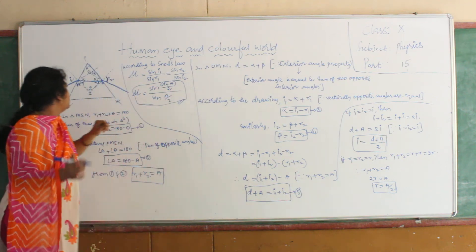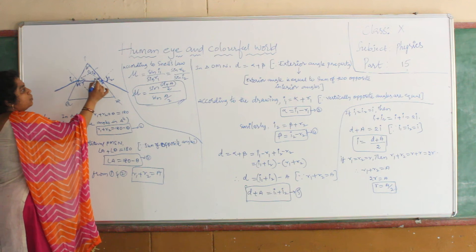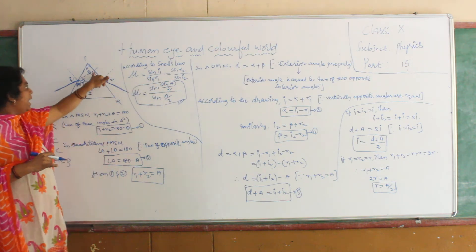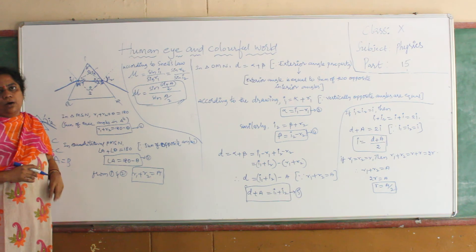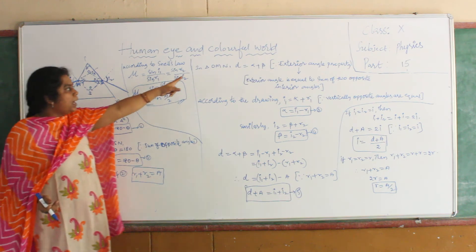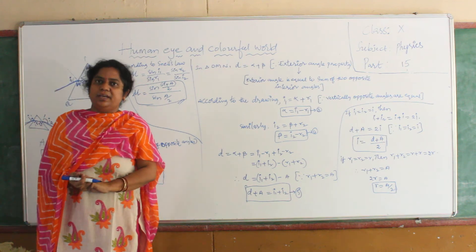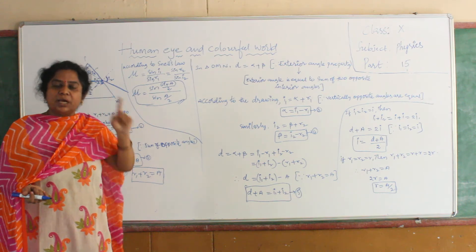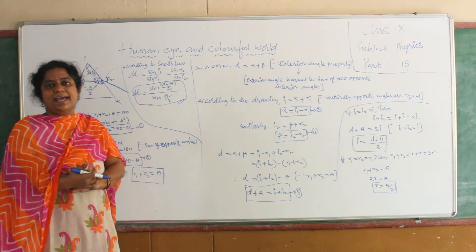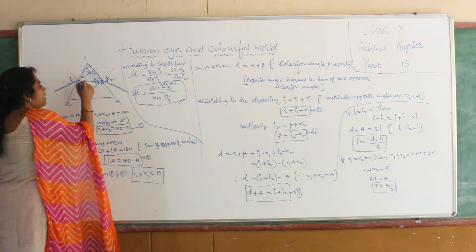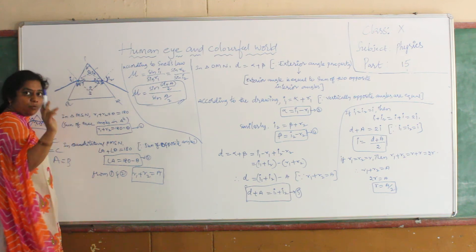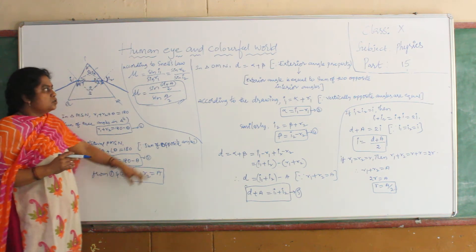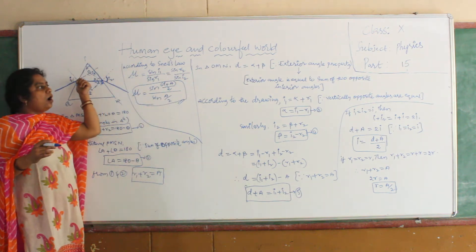Now consider triangle O, M, N. Using the exterior angle property — the exterior angle is equal to the sum of the opposite interior angles — we get D is equal to alpha plus beta.